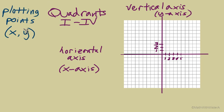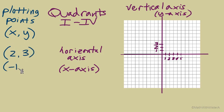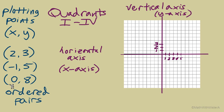We represent a plotted point as an ordered pair: two separate numbers inside a set of parentheses separated by a comma, like (2, 3), or (-1, 5), or (0, 8). These are ordered pairs — two numbers where the order matters. So (0, 8) is not the same as (8, 0). The order matters for all ordered pairs.